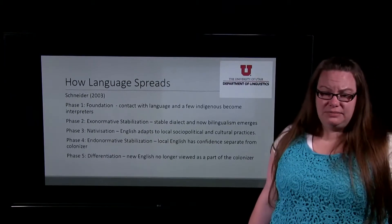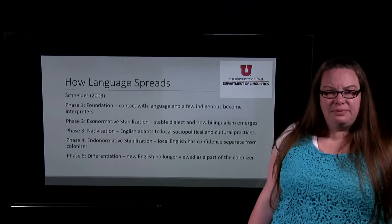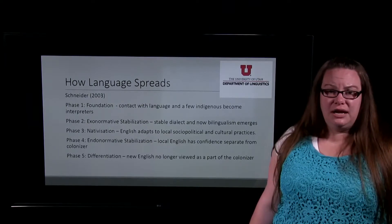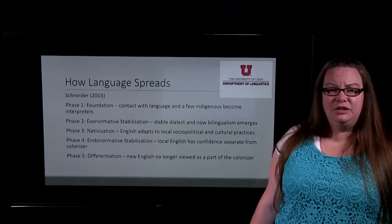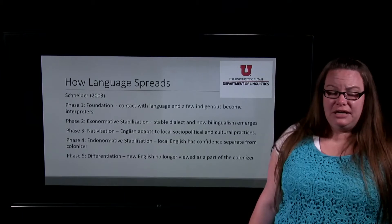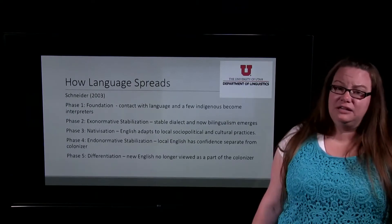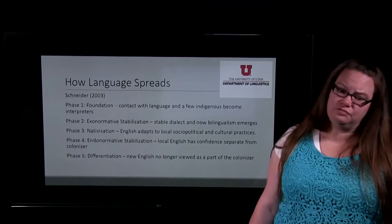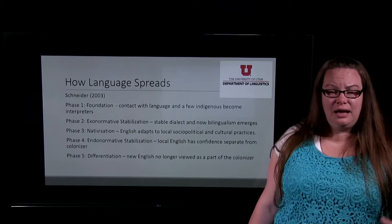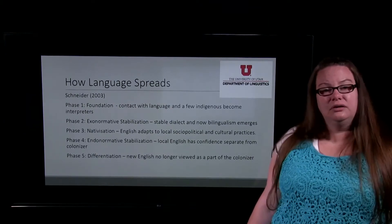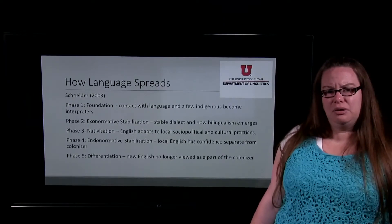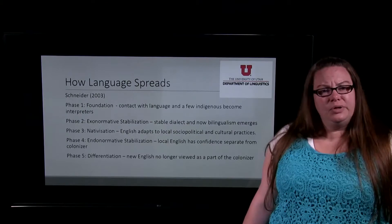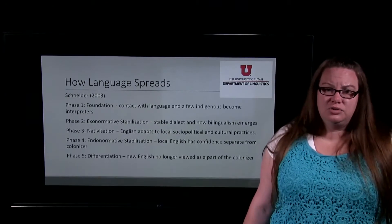As we move into phase two, the exonormative stabilization, we now have a stable dialect of English in India and some bilingualism starts to emerge — people proficient in both the language they learned at home and English, perhaps through working in homes or intermarriage. The dialect of English spoken there starts to stabilize. Phase three is nativization, where English adapts to local sociopolitical and cultural practices. We start to see vocabulary appear in English that explains local customs, and people start to use it as more of a native language, or in addition to indigenous languages.